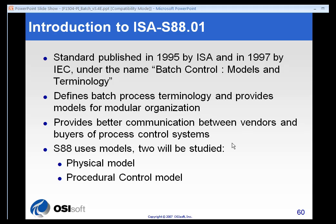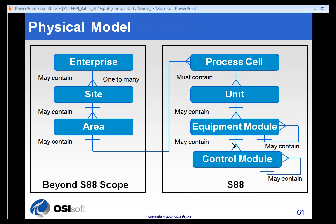The ISA S88 standard proposes using models, and we will look at two of them in the context of the PI batch mechanism. First, there's what's called the physical model. The physical model simply means that you organize your batch data in terms of the physical makeup of the machine.